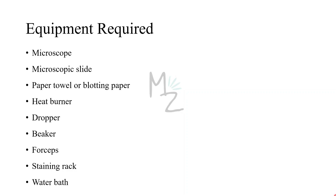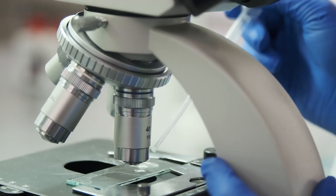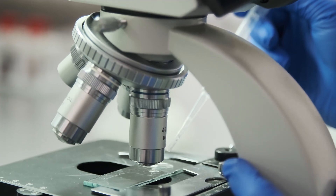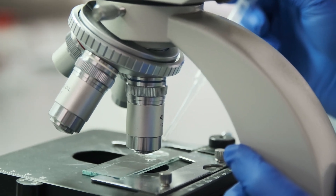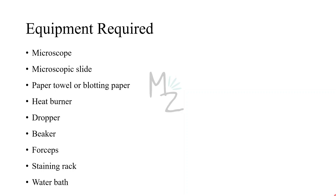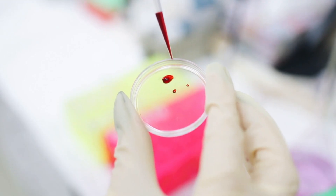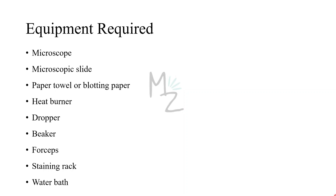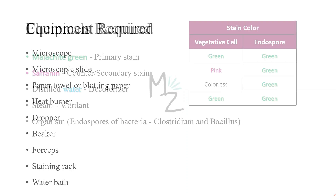Equipment required: we'll need a microscope and a microscopic slide to put the sample on. We'll need a paper towel or blotting paper. We'll need a heat burner, a dropper, a beaker, and forceps to lift the hot slide from the water bath. We'll also need the water bath and a staining rack that we place on the water bath while staining.